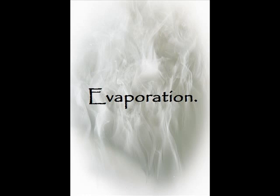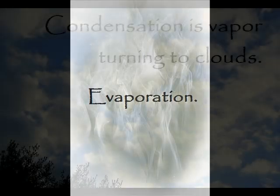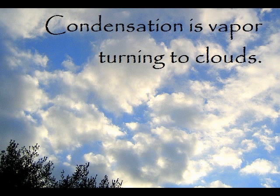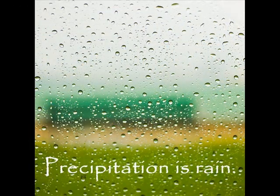The first is evaporation. Evaporation means that the water rises up into the sky and the dust in the air makes it form into vapor. Second is condensation. Condensation means that the vapor rises up and either joins a cloud or forms a cloud of its own. When a cloud is too heavy to carry the vapor, it starts to rain, sleet, hail, or snow. That is called precipitation.